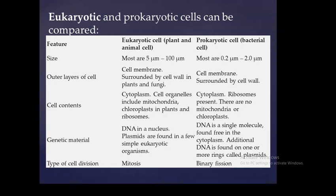Cell components of eukaryotic cells include cytoplasm and organelles such as mitochondria, and chloroplasts in plants, as well as ribosomes. In prokaryotic cells, ribosomes are present in the cytoplasm, but there are no mitochondria or chloroplasts. For genetic material: in eukaryotes, DNA is contained in the nucleus, whereas in prokaryotes, the genetic material is a single DNA molecule found free in the cytoplasm. Eukaryotes divide by mitosis; prokaryotes divide by binary fission.